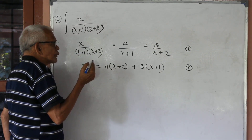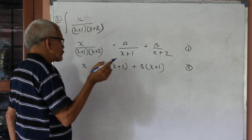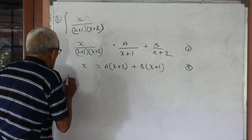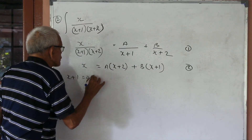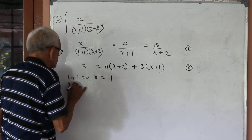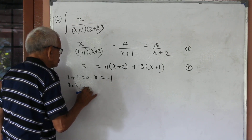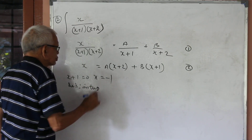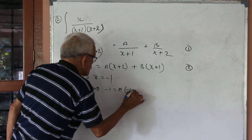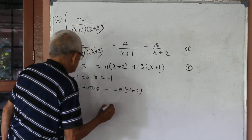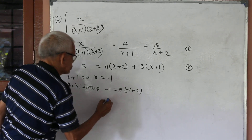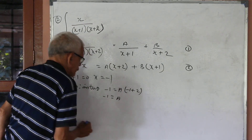To get A, put x plus 1 equal to 0 in equation 1, then substitute that value. x plus 1 equal to 0, x equal to minus 1. Substituting: minus 1 equal to A into (minus 1 plus 2), so minus 1 equal to A.